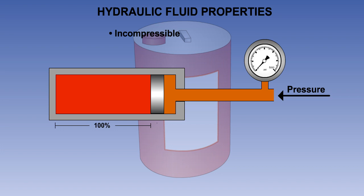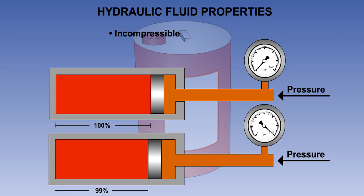In the diagram, we show the effect of applying pressure to a container of liquid. When a pressure of 346 bar or 5000 psi, well above normal system operating pressure, is applied, the liquid is compressed by only 1% of its original volume, and 99% remains.